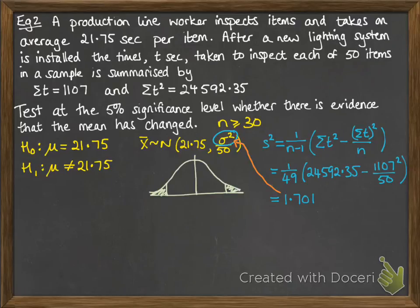Our normal distribution looks like this. We are looking for a change, so it's a two-tailed test. We want a 5% significance level that gives us 2.5% on either side. That z value would be 1.96 and -1.96.